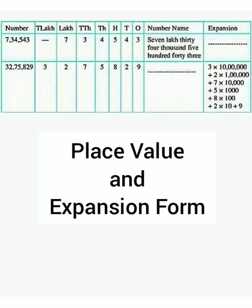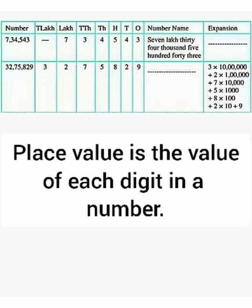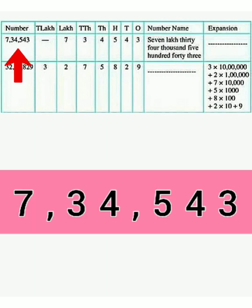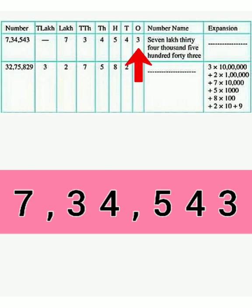Now, let's see the meaning of place value and expansion form. Place value is the value of each digit in a number. For example, let's take the number 7,34,543. The first digit from the right side is 3 and it is at the units place. So, the value of 3 is 3 into 1 is equal to 3.